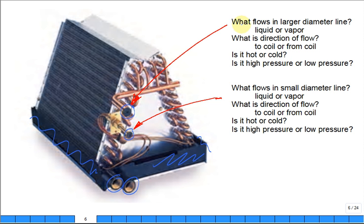So what flows in the large diameter line? Liquid or vapor? That's your choice. Is it liquid or vapor that flows in the large diameter line? What direction does it flow in the large diameter line? Does it flow to the coil or away from the coil?